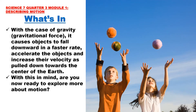With the case of gravity or gravitational force, it causes objects to fall downward at a faster rate, accelerating them and increasing their velocity as they are pulled down towards the center of the earth. In this picture, we have three balls that are thrown upward. After a few seconds, these balls are going to fall downwards because they are being pulled towards the center of the earth. This force that causes all objects to be pulled towards the center of the earth is called gravity or gravitational force.